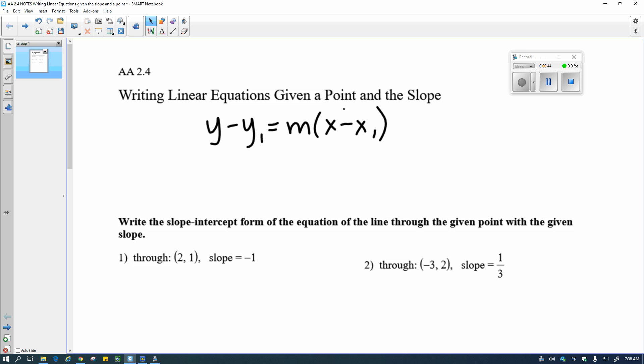So we're going to do y minus y₁ equals m times x minus x₁, where m is the slope, that's the same as it was before. And x₁, y₁ are the given point.